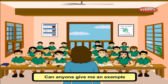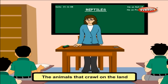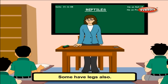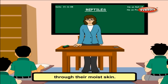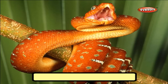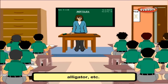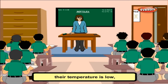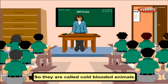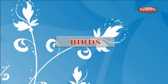Reptiles are animals that crawl on land — for example, snake. The animals that crawl on land are called reptiles. Some have legs, some do not. Most of these animals breathe through their moist skin. Examples: snake, crocodile, lizard, alligator. Their body temperature depends on their surroundings — if it is low, their temperature is low; if it is high, their temperature is high. So they are called cold-blooded animals.